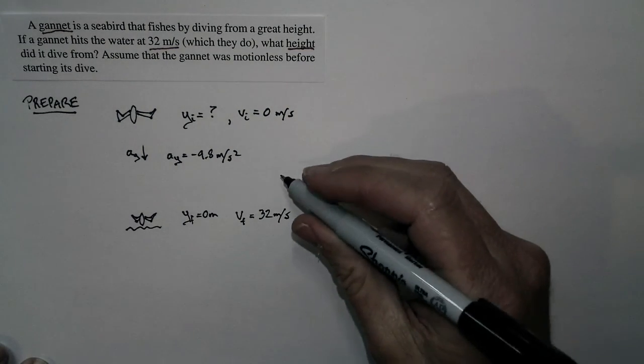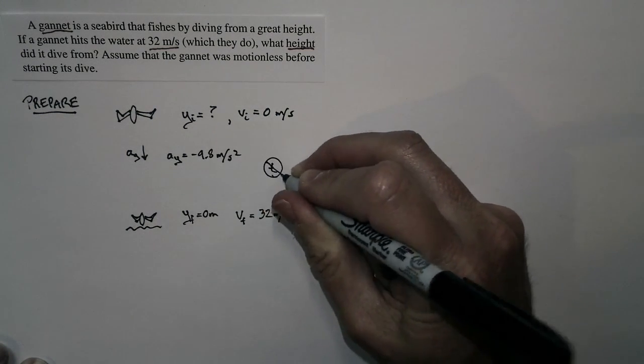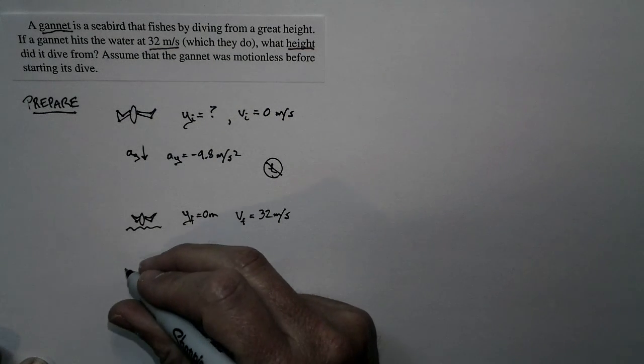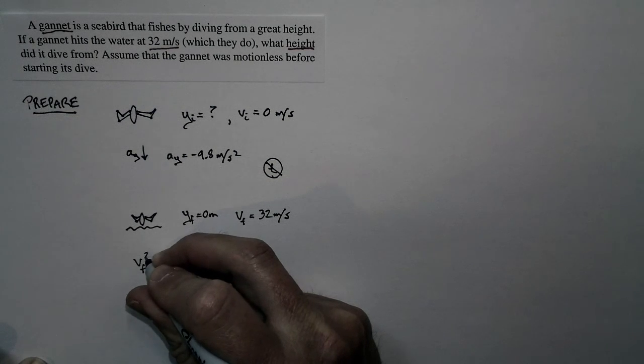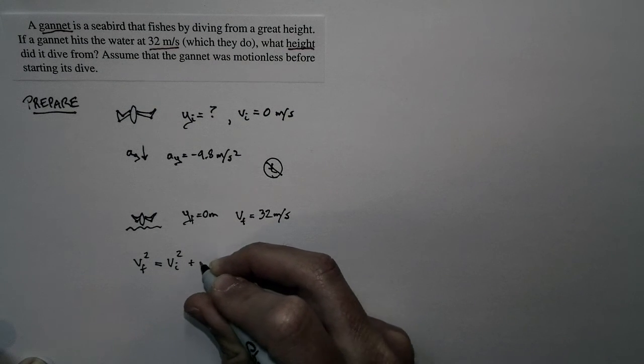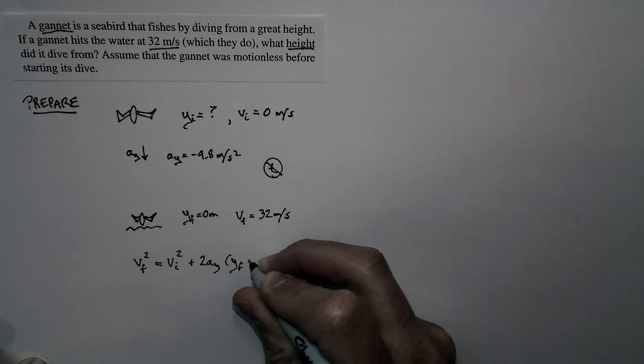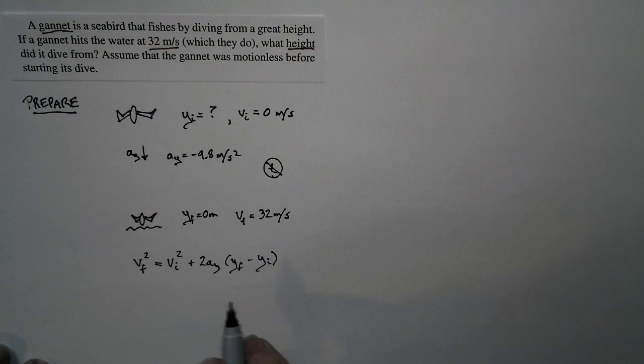The one fact that's missing from this whole description is time. Time does not appear in anything we're told or anything we're looking for. So we want to use a relationship that doesn't use time. We use our basic kinematic relationship that says the final speed squared is equal to initial speed squared plus 2 times the acceleration in the y direction times the final position minus the initial position.